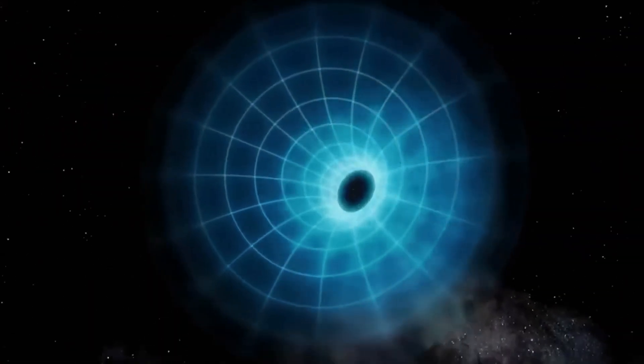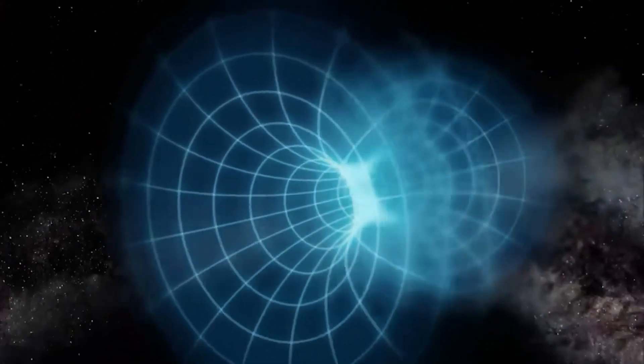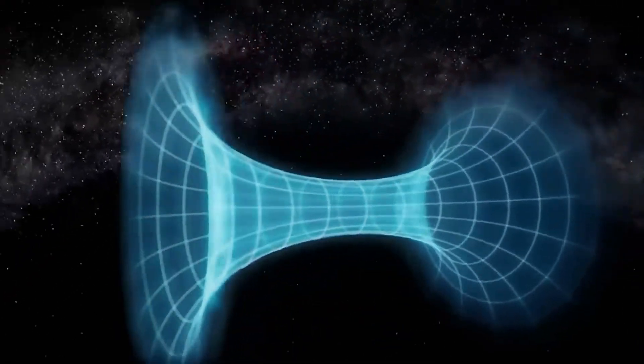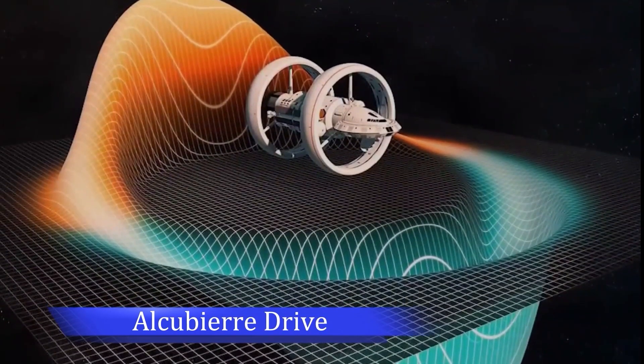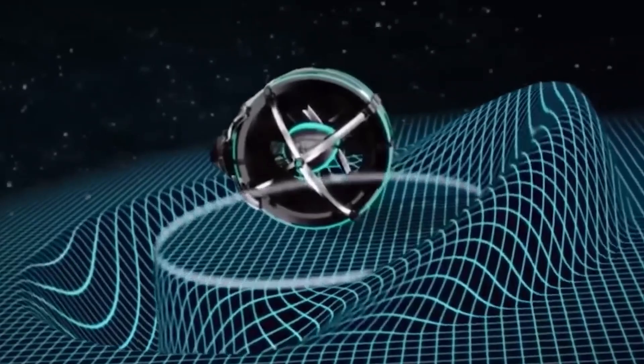The warp drive, bending the fabric of spacetime, seeks to exceed the speed of light. According to Einstein's theory of general relativity, massive objects distort spacetime by generating gravity. In 1994, the physicist Miguel Alcubierre proposed a mathematical model for this concept, the Alcubierre Drive.